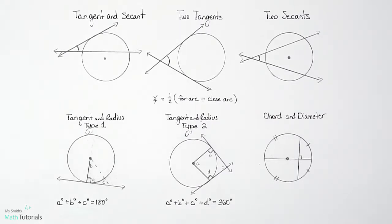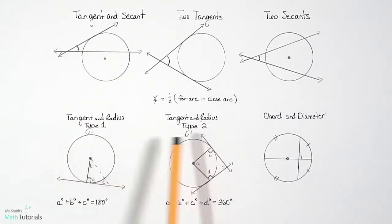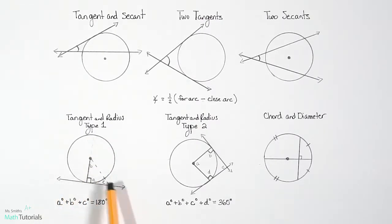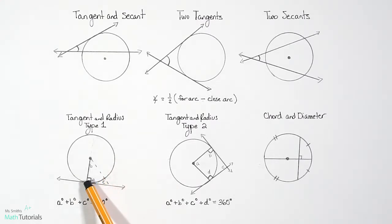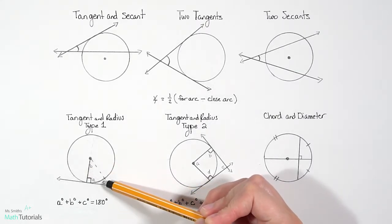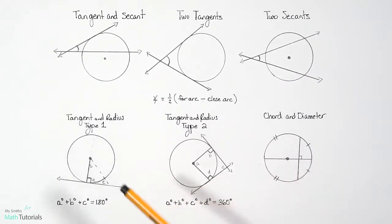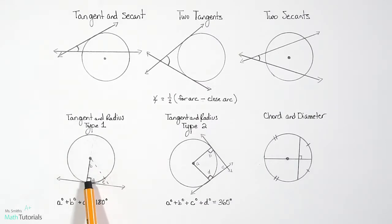The next type of relationship has two types: tangent and radius, type one and type two. For type one, we have a tangent and a radius — a radius always starts at the center of the circle and moves to the outer edge. Together they form a 90-degree angle. If we create an extension shown with a dashed line, we've created a right triangle, and all angles — angle A, the 90-degree angle, angle B, and angle C — add up to 180 degrees.